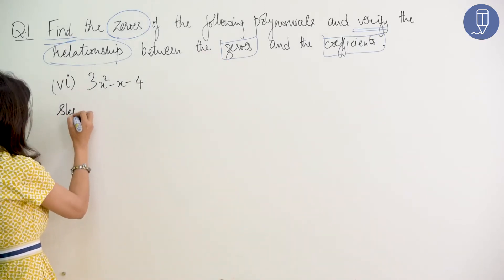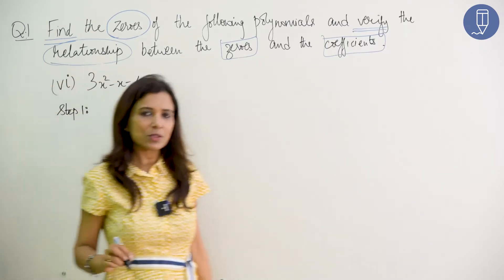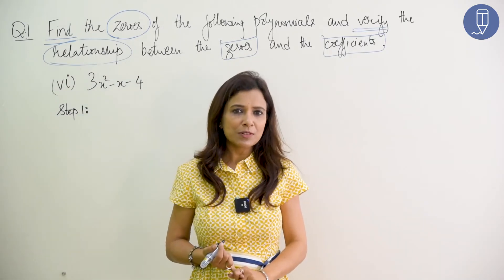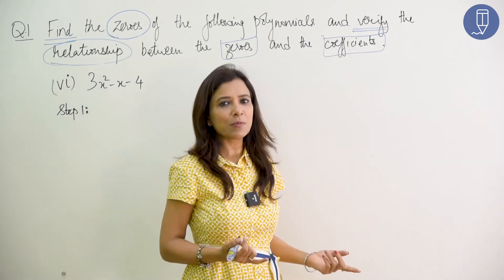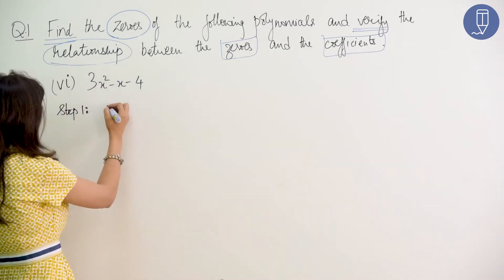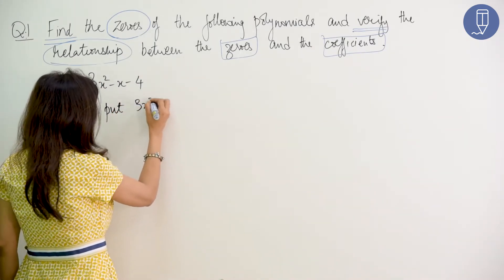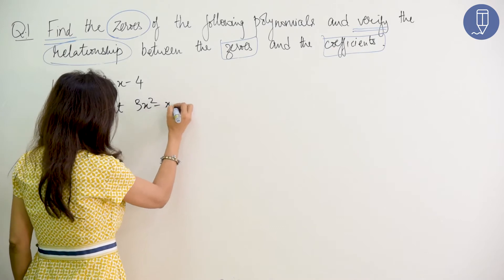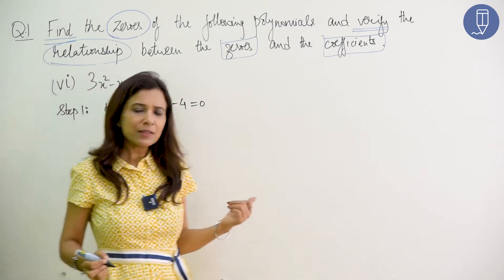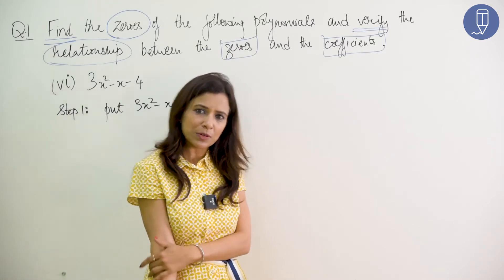Step 1: find the zeros. The first step to find the zeros is to put the polynomial equal to 0. So, put 3x squared minus x minus 4 equal to 0. When we find zeros, we put the polynomial equal to 0.